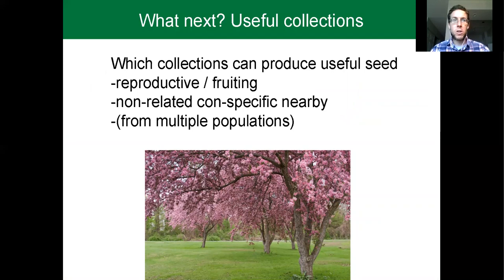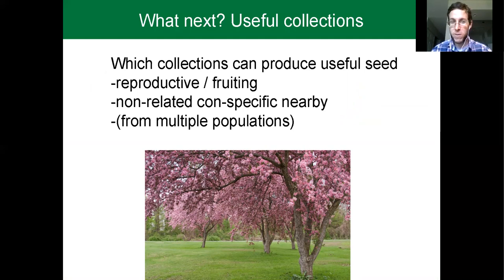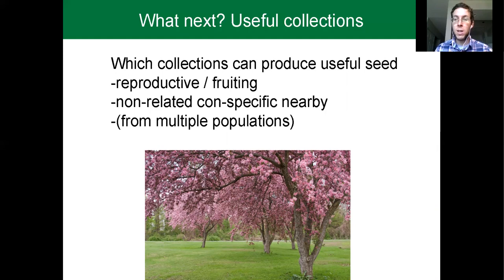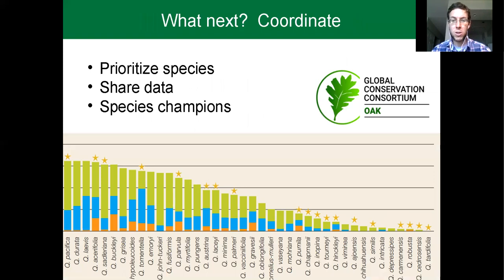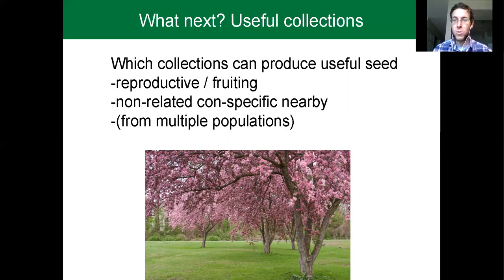As we start to think about conservation groves or large collections in botanic gardens, I've also started thinking about how many of our gardens are actually useful for conservation action such as restoration — producing seed that can be used. To meet this criteria, collections would need to have individuals of reproductive age with preferably non-related individuals of the same species nearby, so that seed produced would not be inbred, and ideally from multiple locations. We can make crosses both within and among populations to preserve local adaptations but also try out new gene combinations among populations that might be needed to deal with environmental change.